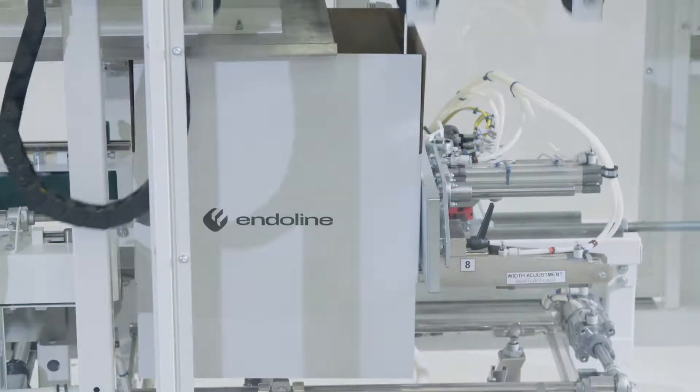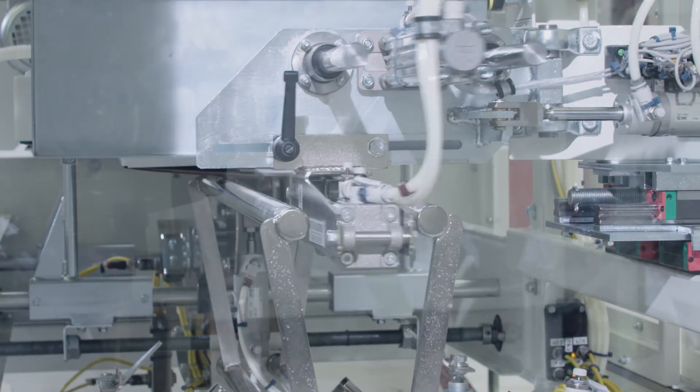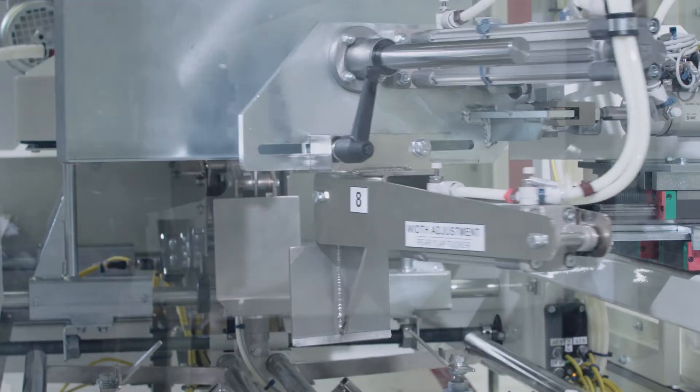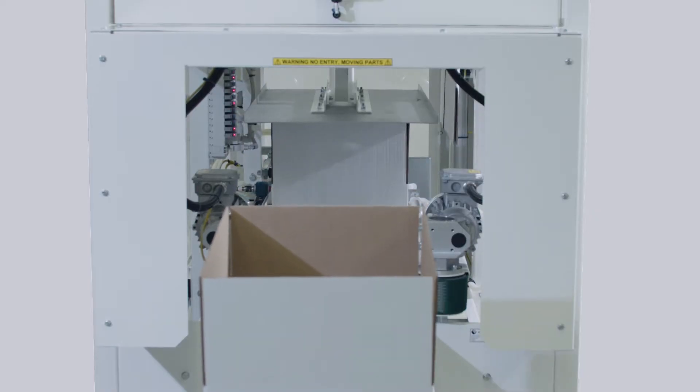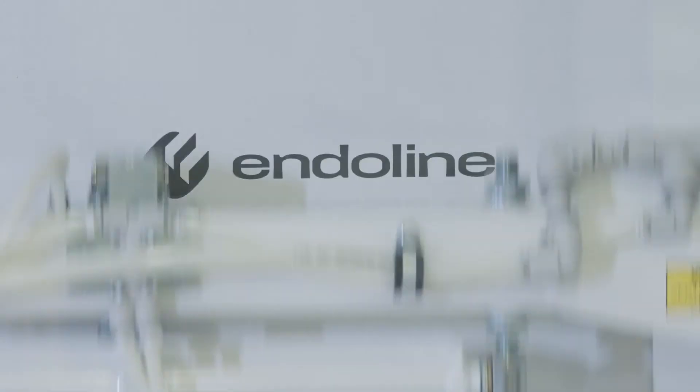The 251 Case Erector has a robust computer-aided design chassis and is built using high-quality components in order to withstand the strong demands of a typical end-of-line packaging environment.